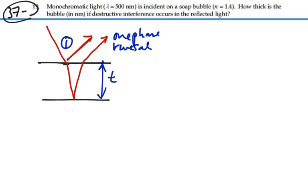However, we have a path difference to consider as well. Within the bubble, the wavelength of the light is going to equal the wavelength outside the bubble divided by the index of refraction of the material, the bubble material. That's going to be equal to 500 nanometers divided by 1.4 or 357 nanometers. So that is the wavelength inside the bubble.